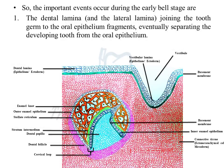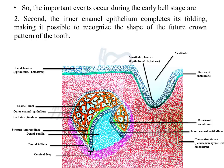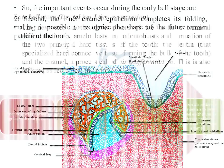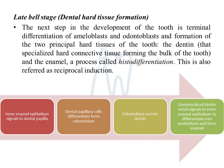Two important events occur during the early bell stage. First, the tooth germ is no longer connected to the oral epithelium via the dental lamina — it becomes a separate structure. Second, morphodifferentiation occurs, defining the shape of the tooth. These are the two most important events of the early bell stage.